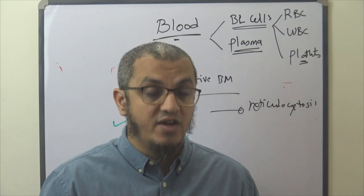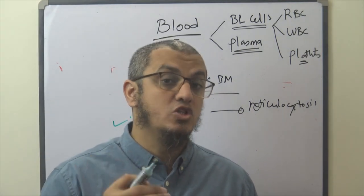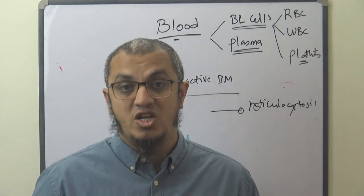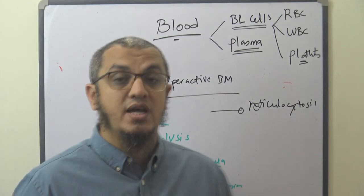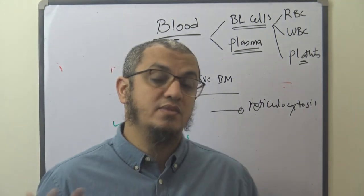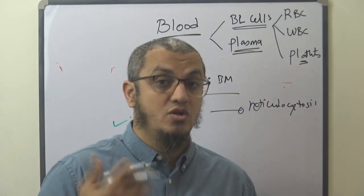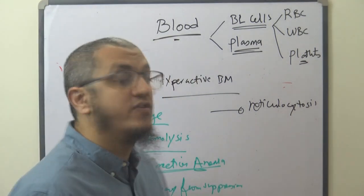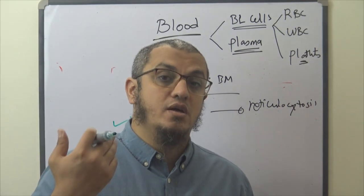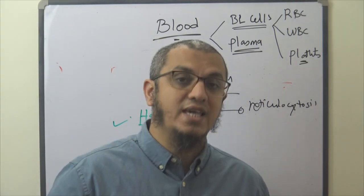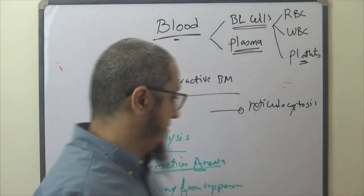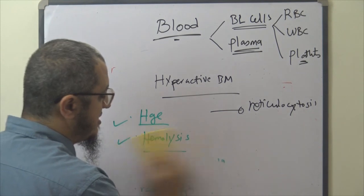The very important two causes of hyperactive bone marrow are hemorrhage and hemolysis. In hemorrhage, we need to replace the lost blood so the factory works rapidly to replace the loss. Also, reticulocytosis is an indicator of correction of anemia — for example, a patient with iron deficiency given iron will have the bone marrow start to work again. Another cause is recovery from bone marrow suppression, where a patient stops a suppressive drug and the bone marrow recovers.